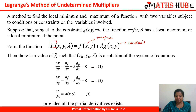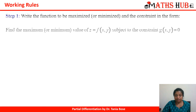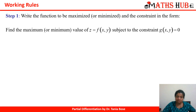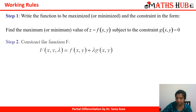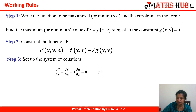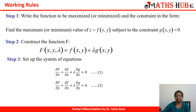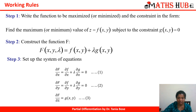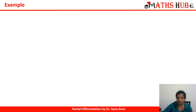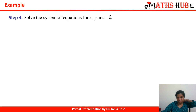Once we find the values of λ, the working rules are: take the function to be maximized or minimized as f and the constraint as g. Construct F = f + λg. Set up ∂F/∂x = 0, ∂F/∂y = 0, and ∂F/∂λ = 0. Solve the system of equations to find out the values of x and y.